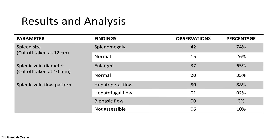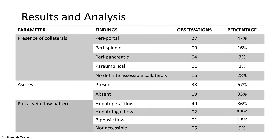Splenic vein flow was predominantly hepatopetal at 88%. Periportal collaterals were the most commonly observed, seen in 47% of the patients, and ascites was present in 67% of the cases.